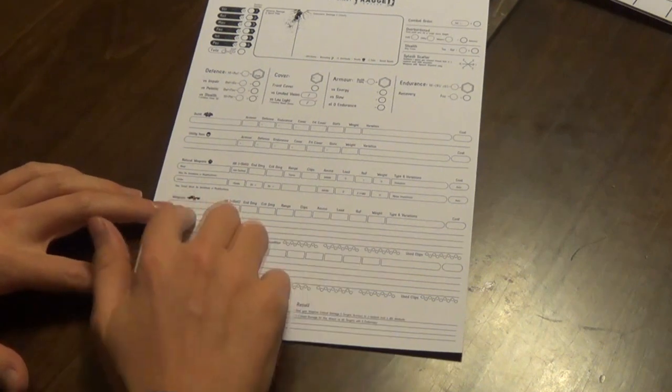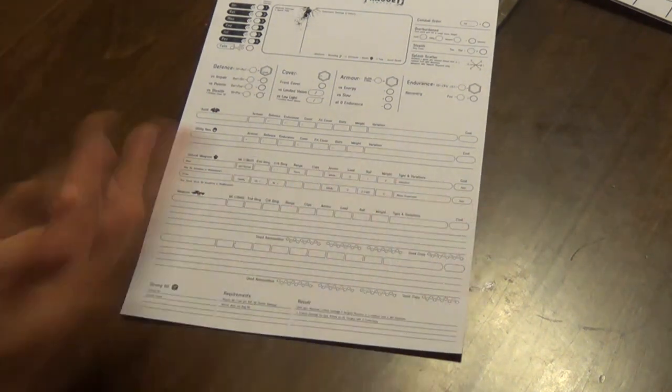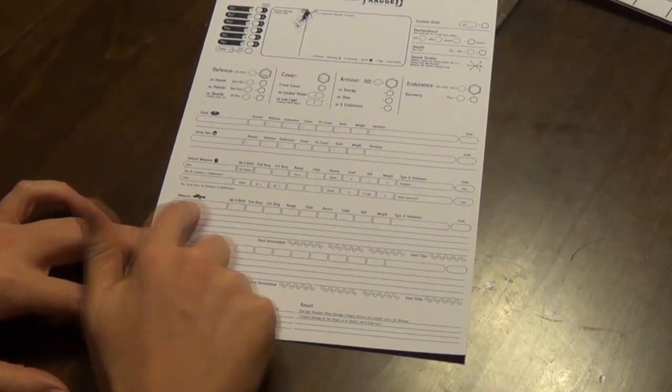Let's have a look through each of these sections really quickly. So the first thing here is where you put your name: rifle, pistol, what have you.